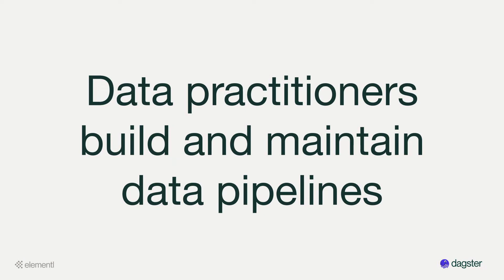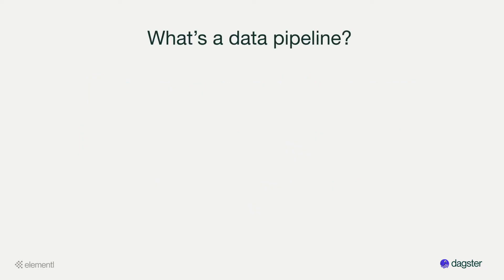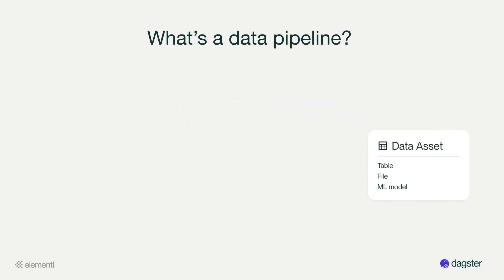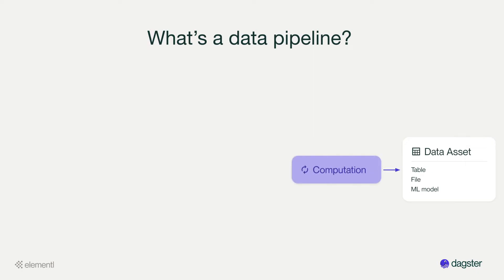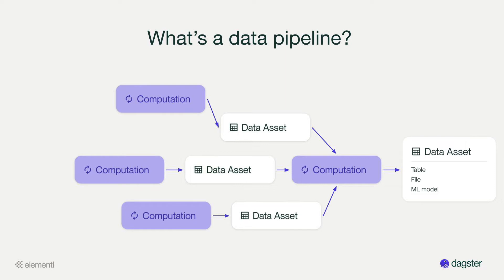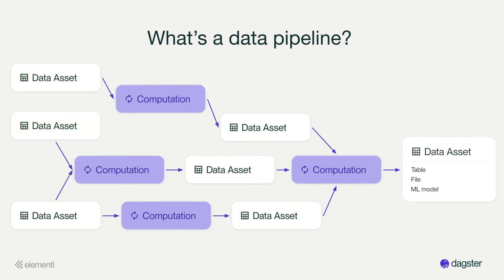Data practitioners use orchestrators like Dagster or Airflow to build and run data pipelines. The point of a data pipeline is typically to produce and maintain a set of data assets like tables, files, or machine learning models. Accomplishing that usually requires modeling a graph of computations and intermediate data to get you from the source data you're starting with to the data products you're trying to create.